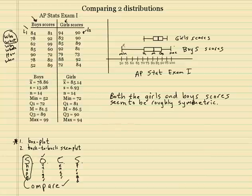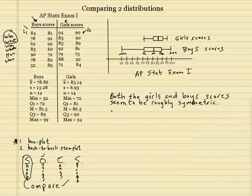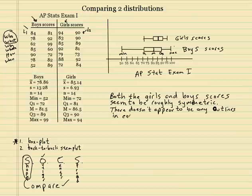There doesn't seem to be any outliers. Doesn't look like any of the scores are outliers — maybe the 52, possibly. But since it didn't show up on this graph as a dot, not a whisker, we know it's not an outlier. So there doesn't appear to be any outliers in either data set. You see how I'm writing about both of them.